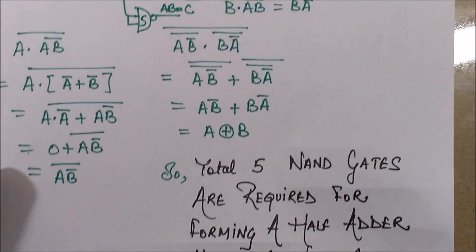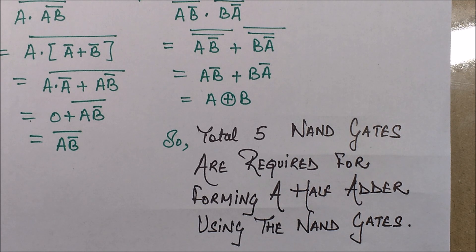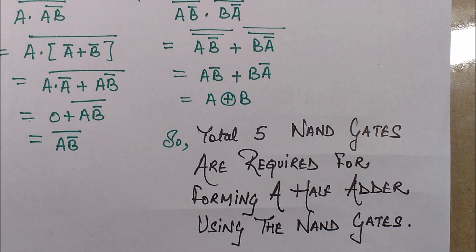So 5 NAND gates were required in order to form this half adder. That's all for the circuit realization of a half adder, and in a similar manner you can perform the circuit realization of other combinational circuits. I am sure this session would have helped you gain some more clarity of the concept. If it did, please like the video and keep subscribed for more good work coming up. Thank you.